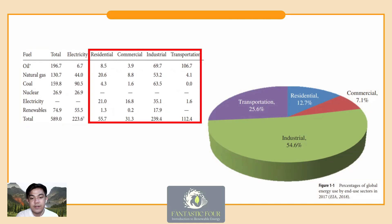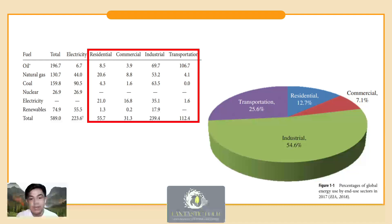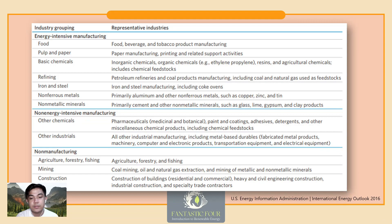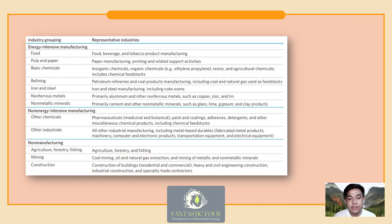Energy use is expected to increase worldwide, driven mainly by industry, mostly in developing countries with strong economic growth. The industrial sector uses the most energy because it is composed of three types: energy-intensive manufacturing such as food, pulp, and paper; non-energy-intensive manufacturing such as pharmaceuticals; and non-manufacturing. The mix and intensity of fuels consumed vary across regions depending on the level of economic activity and technological development.